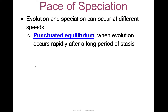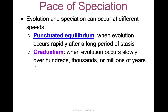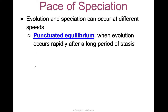Punctuated equilibrium is when evolution occurs rapidly after a long period of stasis. A population of species will remain stable and then something happens — like a bottleneck, a natural disaster, a founder's effect, or even allopatric speciation — that triggers rapid evolution.